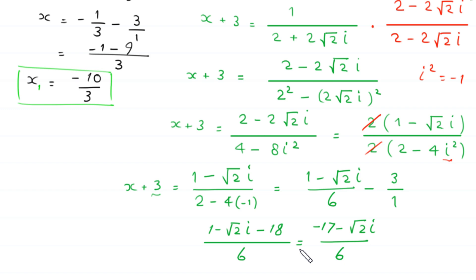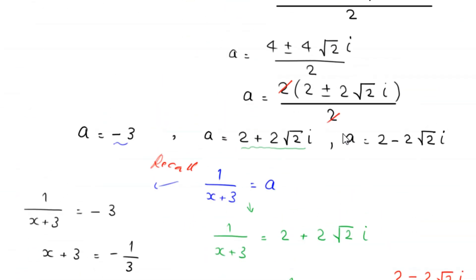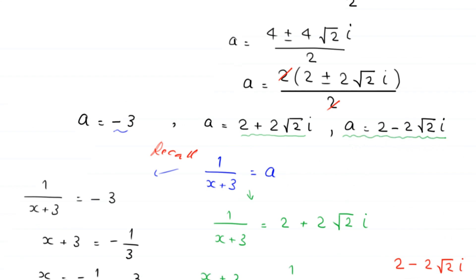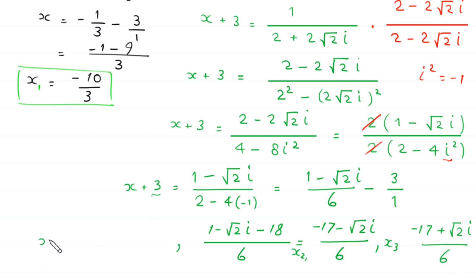When a = 2 - 2√2·i, by conjugate symmetry we get the third value: x = (-17 + √2·i)/6. So the three solutions are x₁ = -10/3, x₂ = (-17 - √2·i)/6, and x₃ = (-17 + √2·i)/6. Thank you.